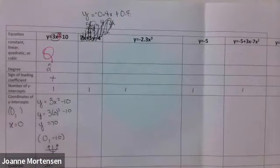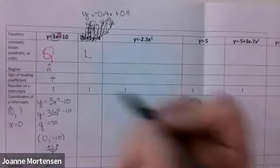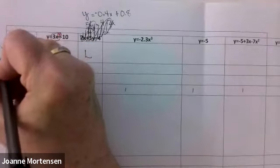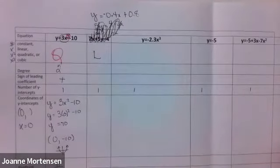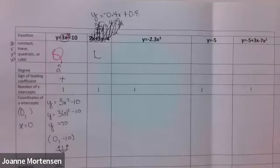So is it a constant, linear, quadratic, or cubic? Linear! Here's a tip: look for x squared, x cubed, or just a number. If it's just y equals a number, it's constant. If there's just an x with no squares or cubes, it's linear. Cubic has a 3.